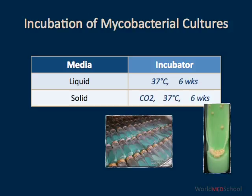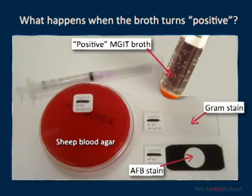Once there is a positive liquid culture, the technologists have to ensure that there is mycobacterial growth, and this is done by subculturing an aliquot on blood agar. A gram stain is used to rule out gram-positive and gram-negative organisms, and an acid-fast stain is used to confirm the presence of mycobacteria.